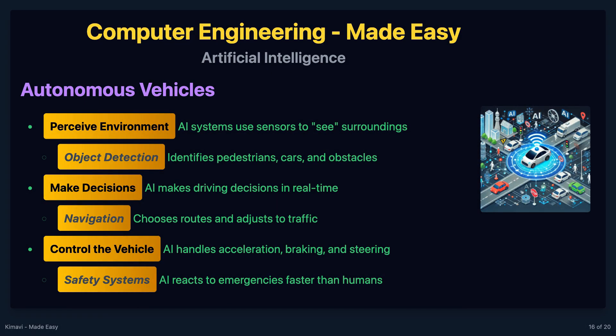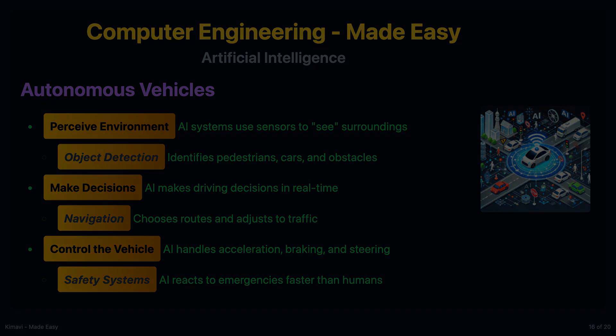Self-driving cars use AI to perceive their environment, make decisions, and control the vehicle. This involves a combination of computer vision, sensor fusion, and reinforcement learning.